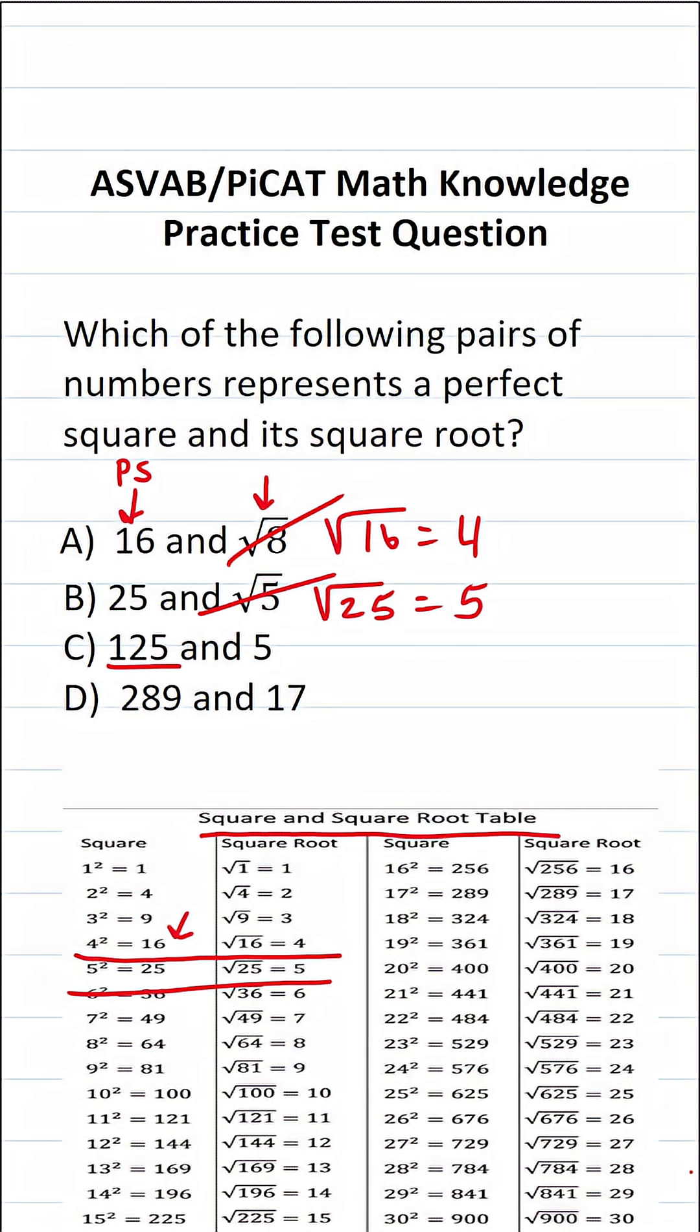125 is a perfect cube, it's not a perfect square. So that one's not correct.